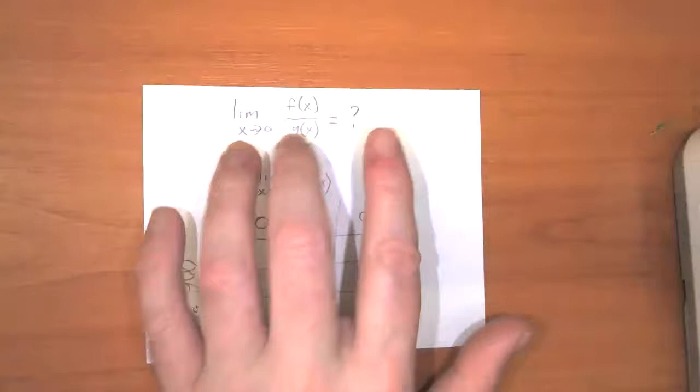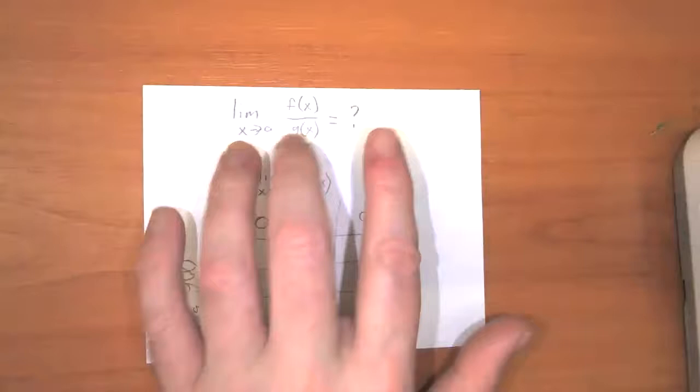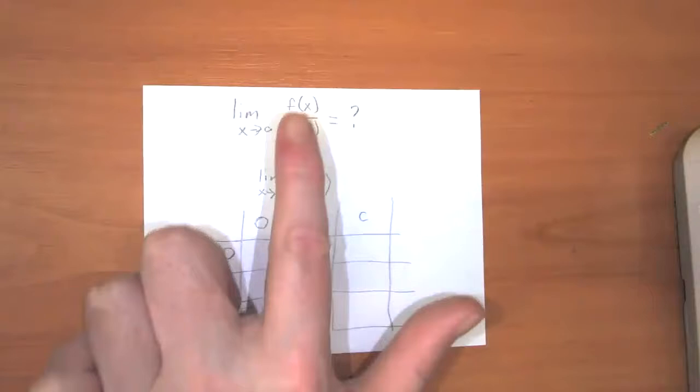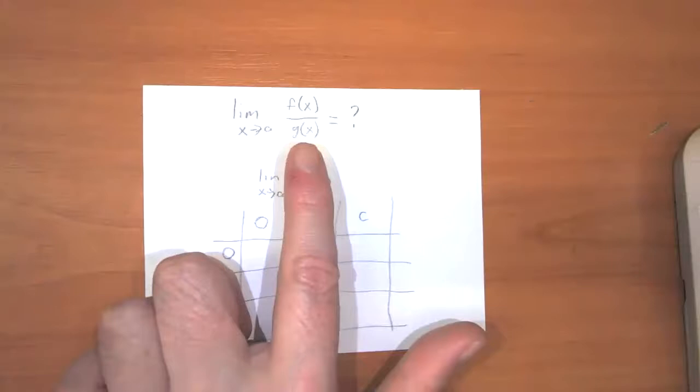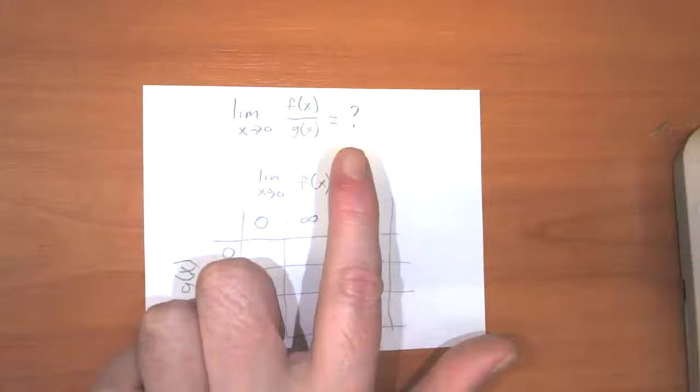Let's say that we wanted to calculate the limit as X approaches A of some quotient of functions. This was something we did a lot in the first unit, and it looks an awful lot like difference quotients themselves. One of the things we can do is look at the behavior of F and G, and that can give us some concept of the behavior of their quotient.